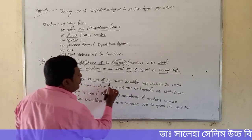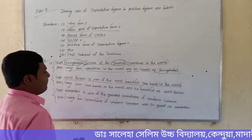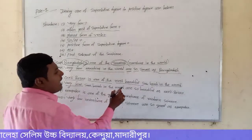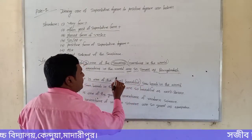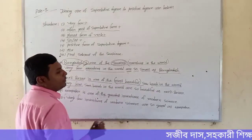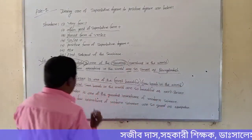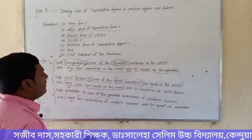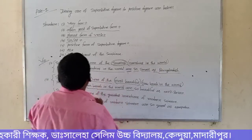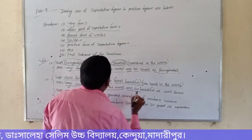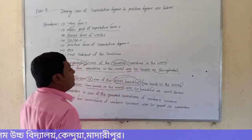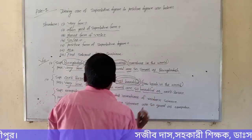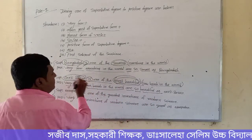Second — superlative: 'Cox Bazar is one of the most beautiful cities in the world.' Similarly, we take 'very few,' then other part — superlative is 'most beautiful,' other part is 'cities in the world.' Plural form of verb: verb is 'is' (singular), but we take plural form 'are.' From structure — so/as — we take 'so.' Positive form of 'most beautiful' is 'beautiful.' Then 'as,' and finally the first subject: 'Cox Bazar.'